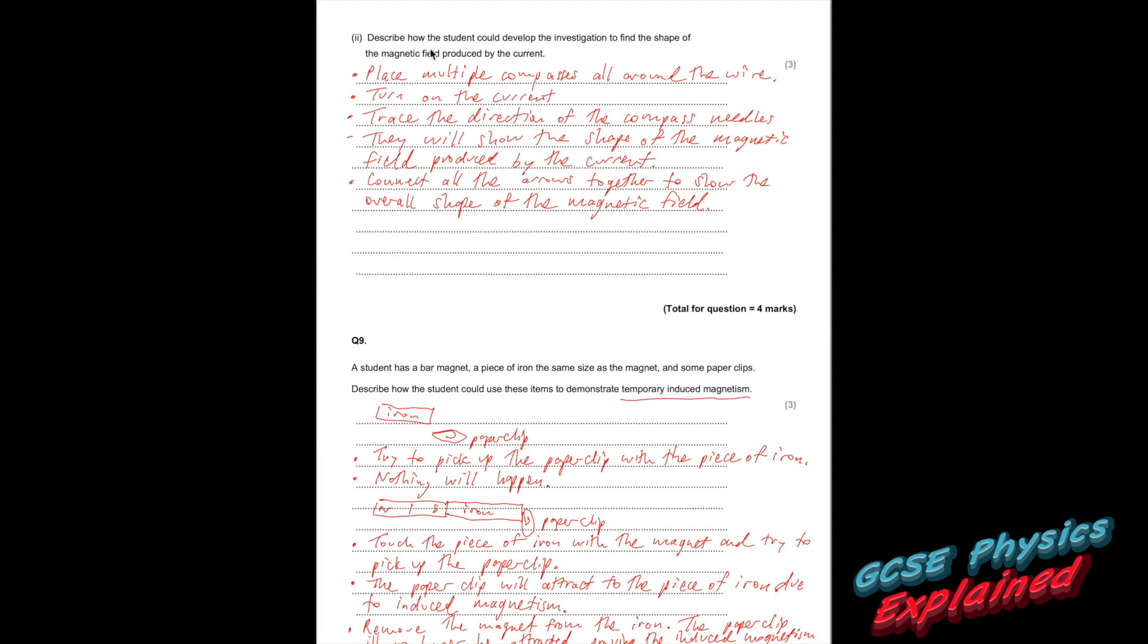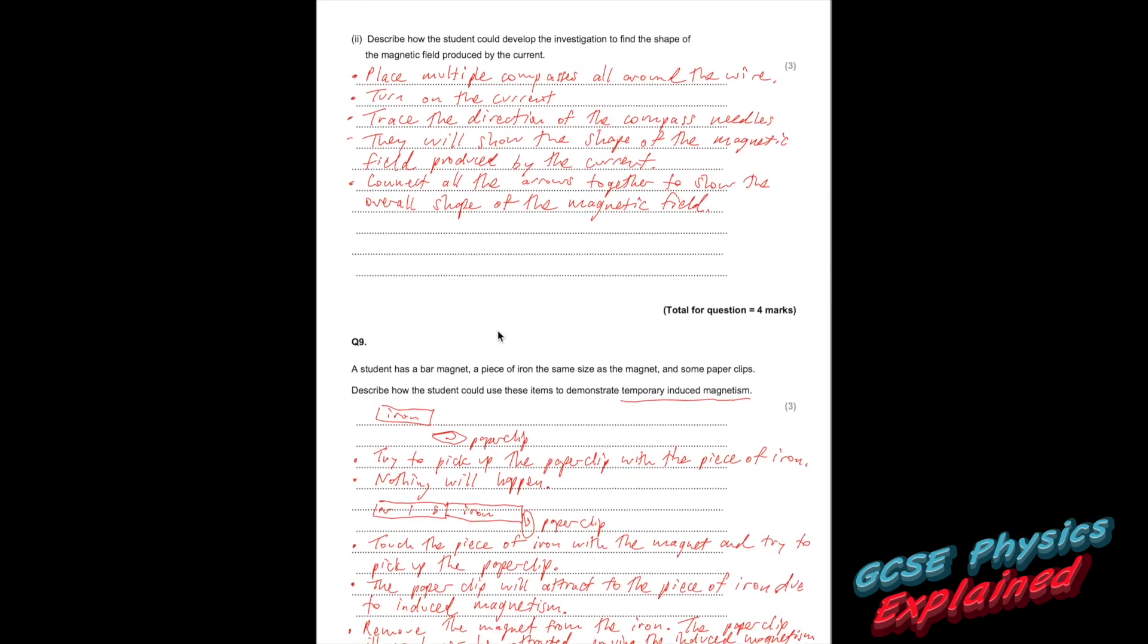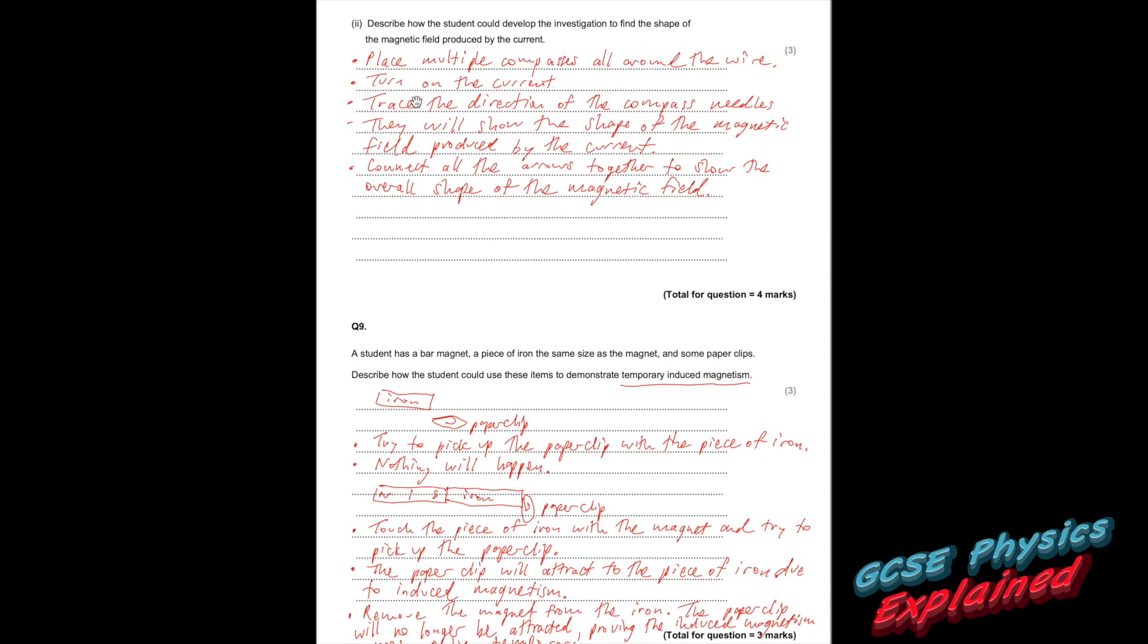Part 2. Describe how the student could develop the investigation to find the shape of the magnetic field produced by the current. Okie dokie. So what you want to do is place several compasses around the wire. Then turn the current on through the wire. And each of the compasses will start to line up with the magnetic field. So if you were to just draw arrows the way that all the compasses are pointing, and then you just want to connect those lines all together. And that would show you the shape of the magnetic field and the direction. And this is how you write it down. Place multiple compasses all around the wire. Turn on the current. Trace the direction of the compass needles. They will show the shape of the magnetic field produced by the current. Connect all the arrows together to show the overall shape of the magnetic field.